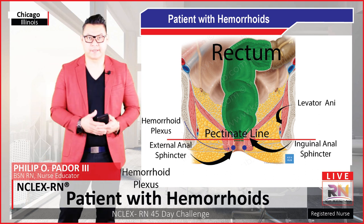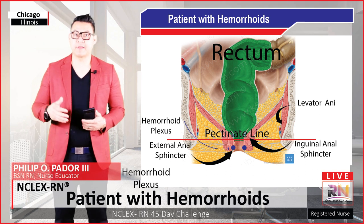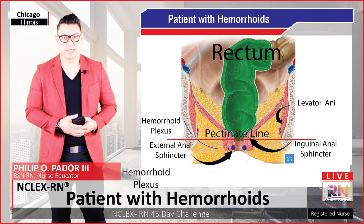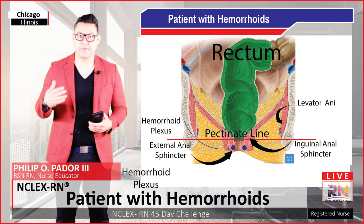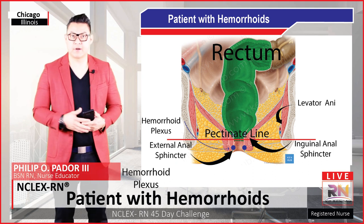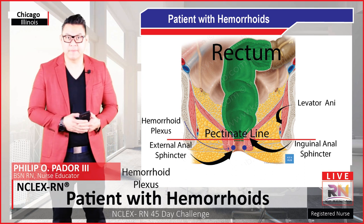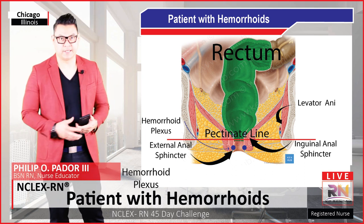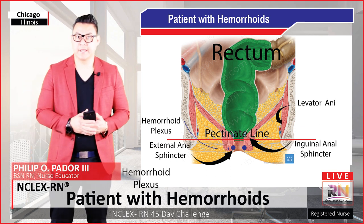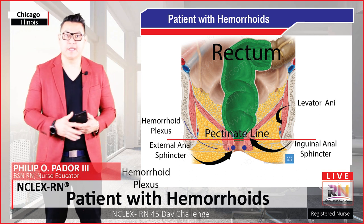And why does this matter? If it's endoderm in origin, which is above the pectinate line, it means that it is essentially part of the abdominal organs, and so pain could be very diffuse and not really localized. However, if it's ectoderm in origin — the cells below the pectinate line — ectoderm in origin means essentially the skin. So when pain occurs below the pectinate line within the ectoderm area, this will cause a very localized and quite painful pain.